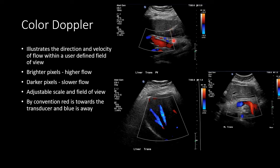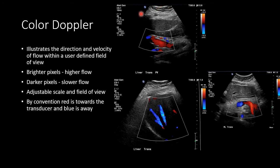One advantage color Doppler imaging has over spectral wave Doppler is a much larger sample volume. Instead of being limited to a small gate or sample volume, you can adjust your sample volume based on the size of your vessel of interest, and it can be made taller, wider, and moved around within your field of view so that you can sample vessels of various sizes in different fields of view.